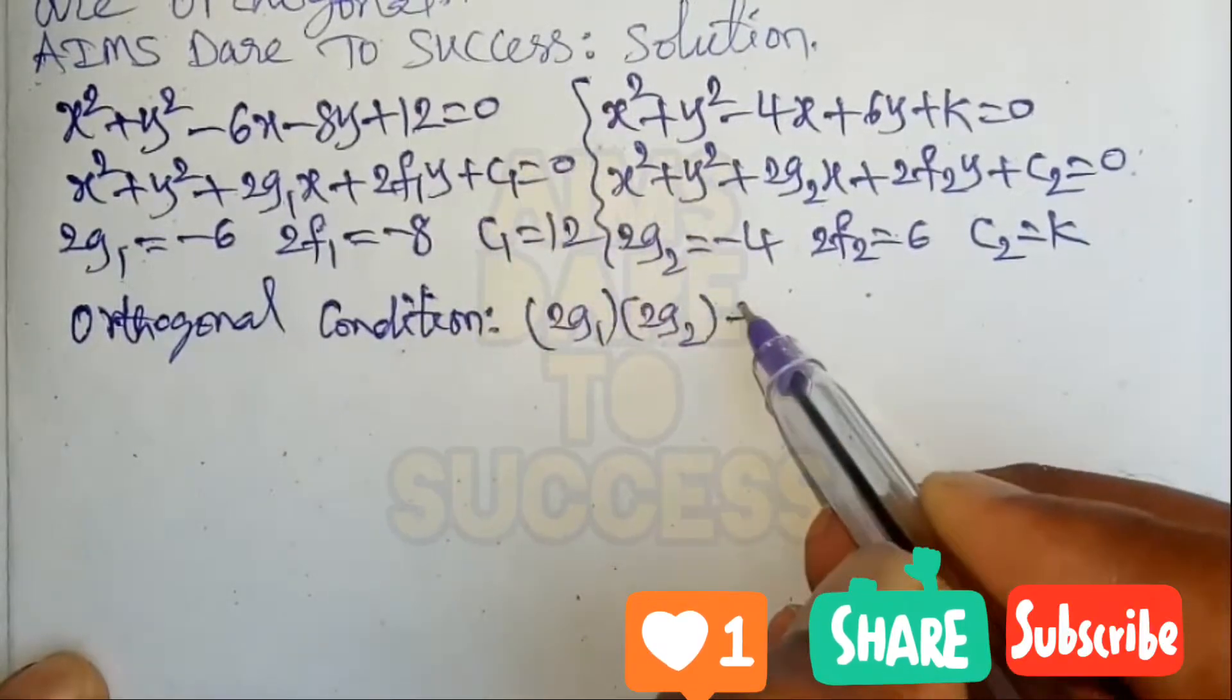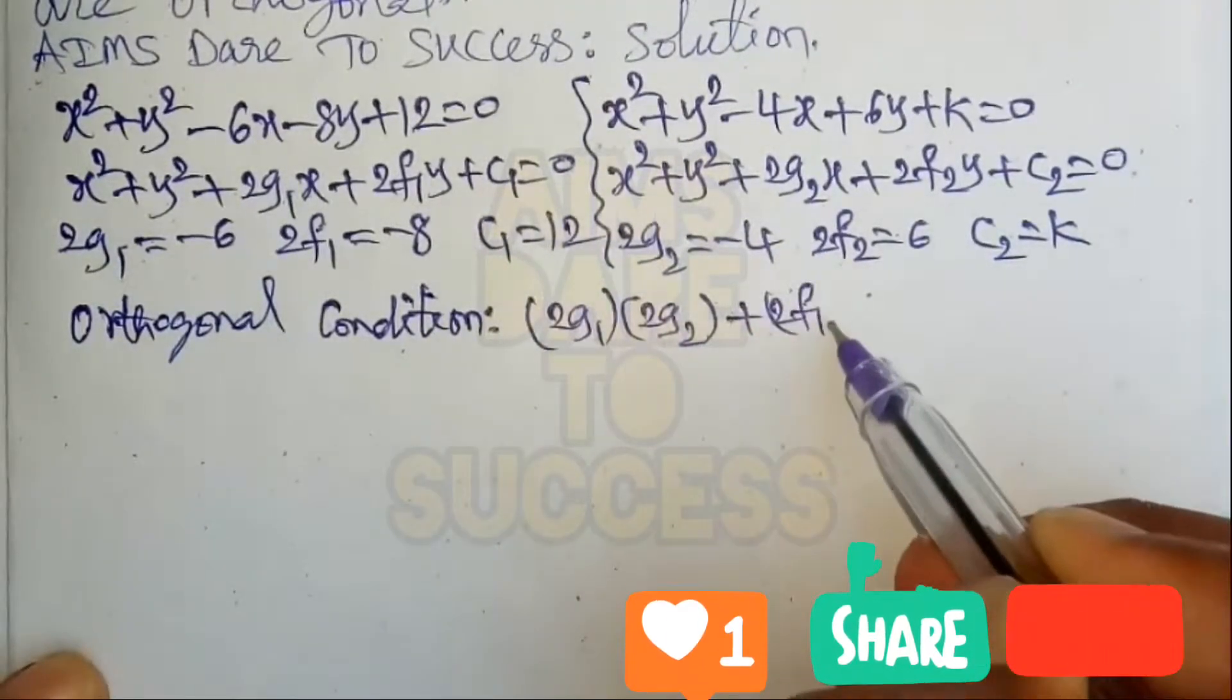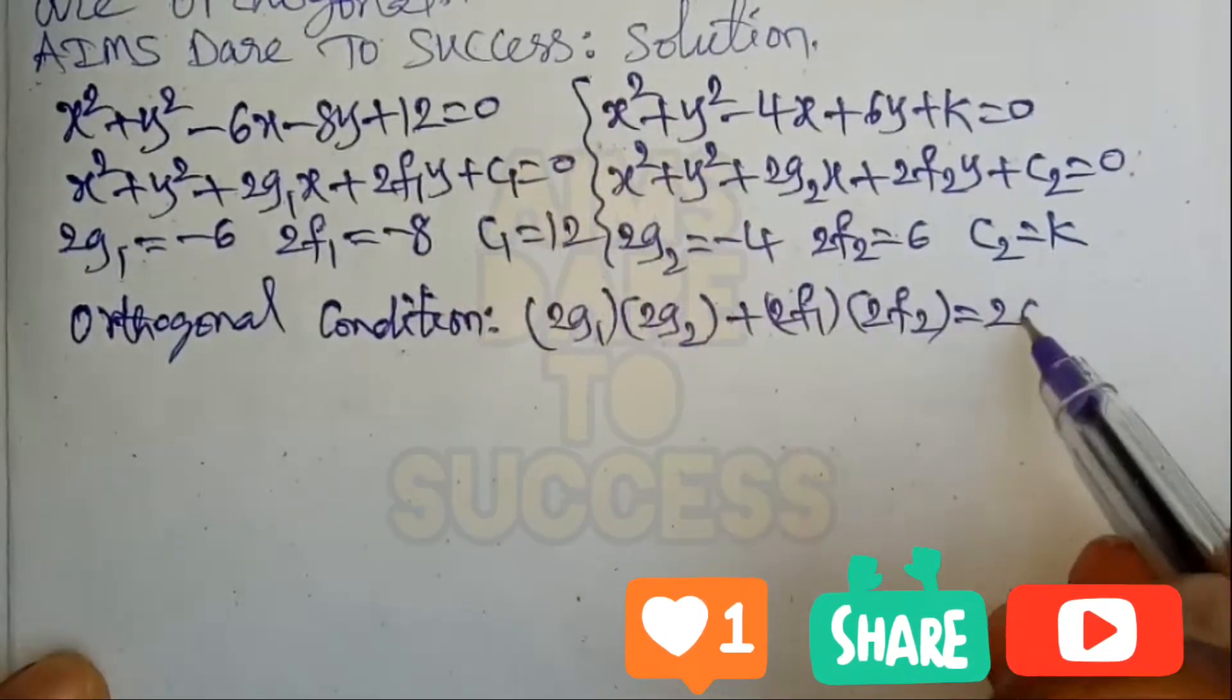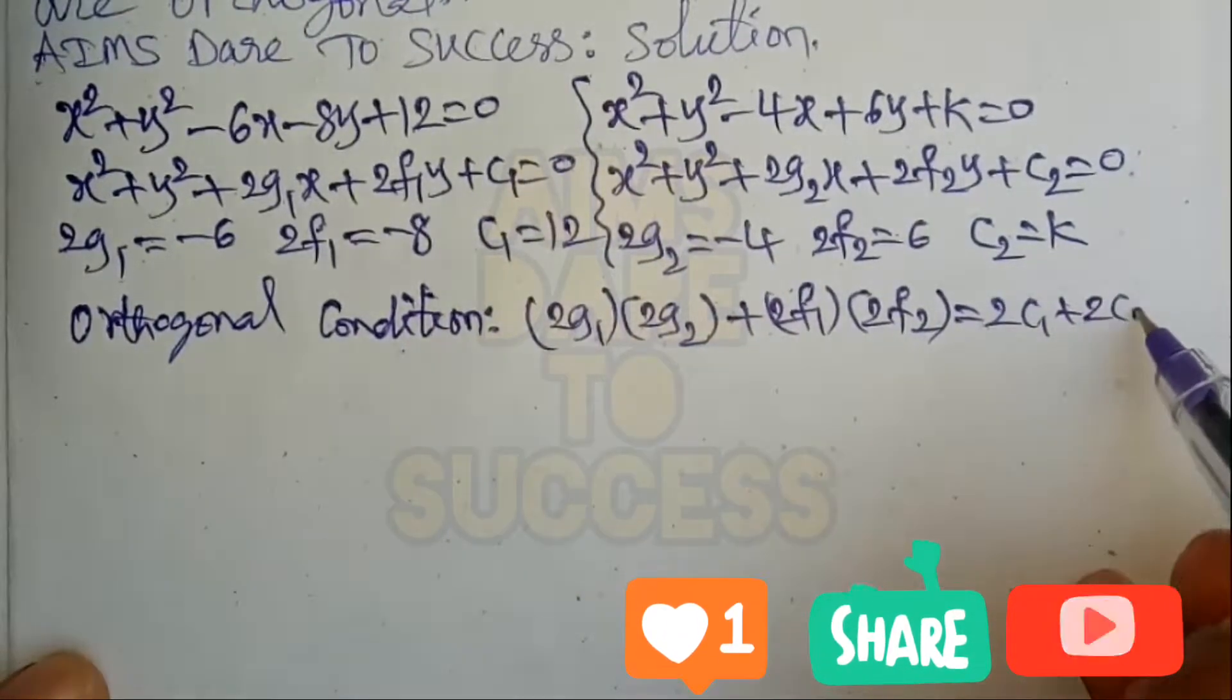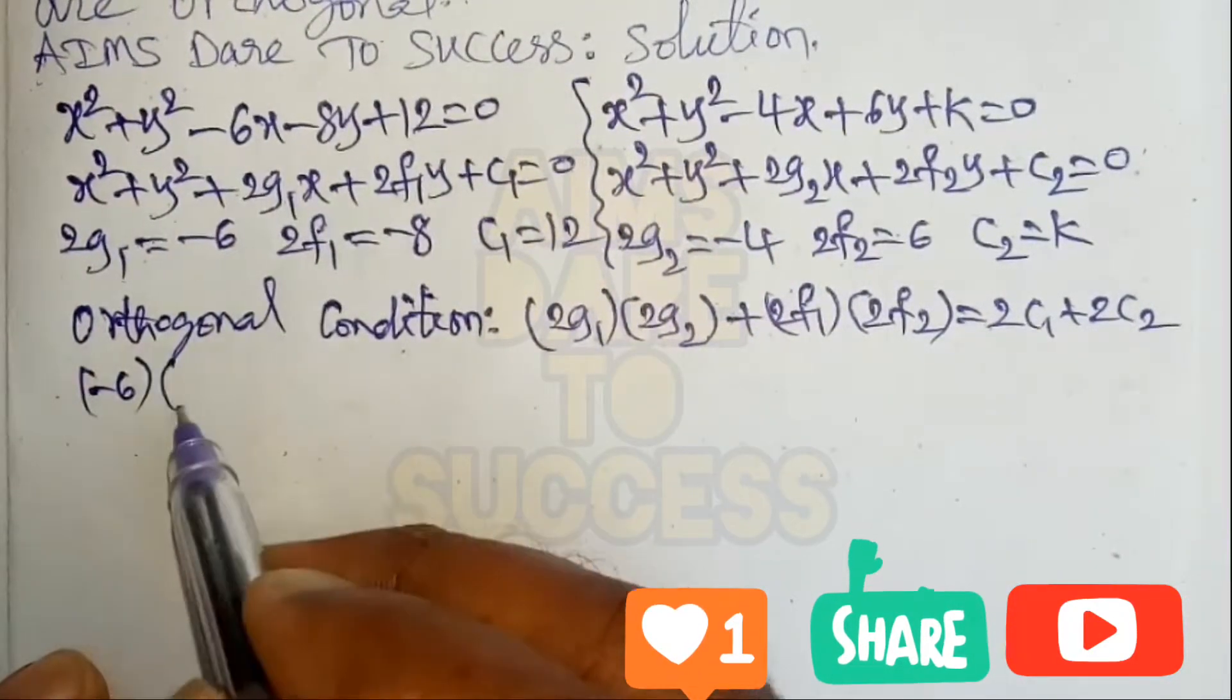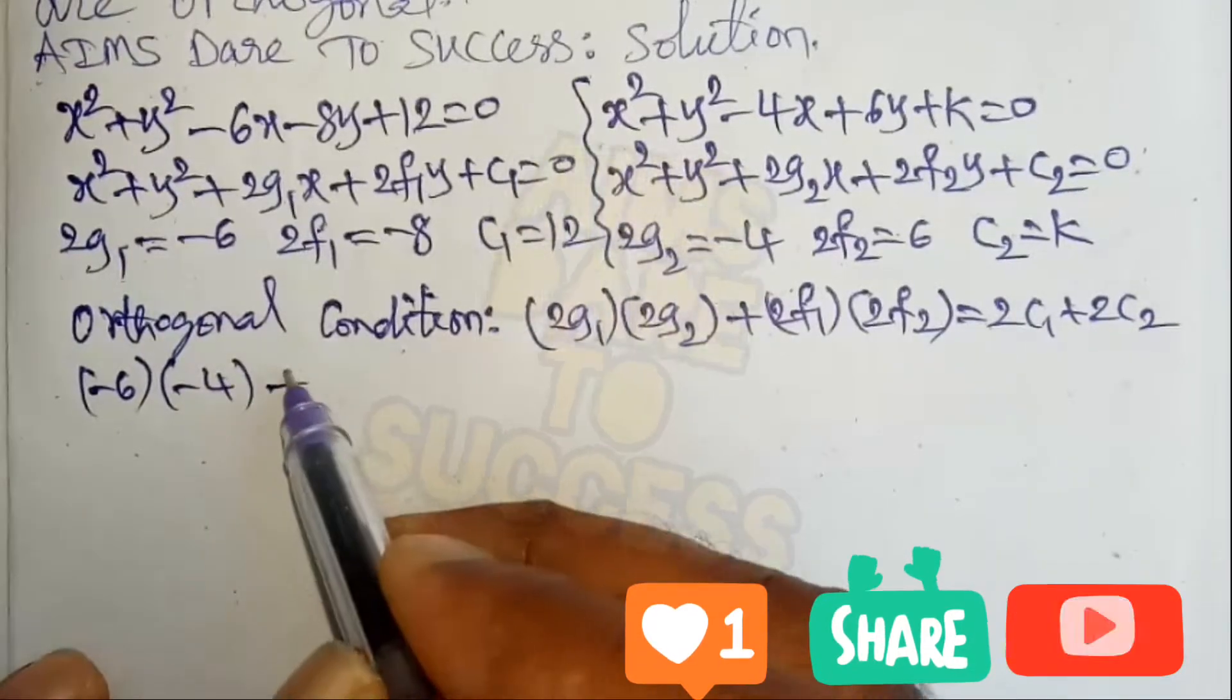The orthogonal condition formula is 2g₁ × 2g₂ + 2f₁ × 2f₂ = 2c₁ + 2c₂. According to the previous circles, you can substitute the values here.